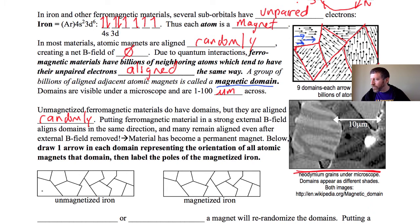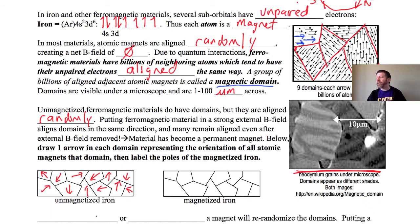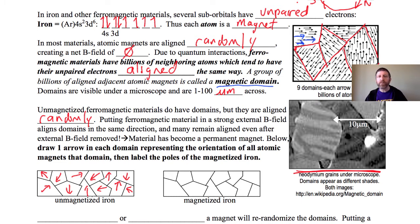Unmagnetized ferromagnetic materials do have domains, but the domains are aligned randomly. For example, here's unmagnetized iron: you might have a domain pointing this way, one that way, one this way — they're totally random. In this picture, every arrow represents a single domain with its billions of atomic magnets aligned in the direction shown.